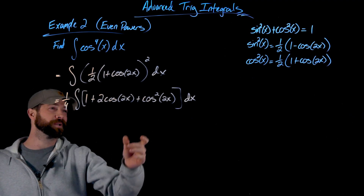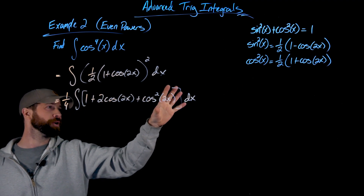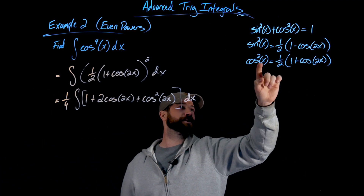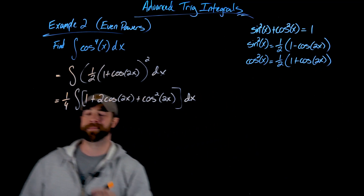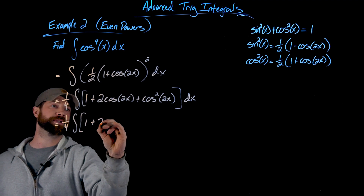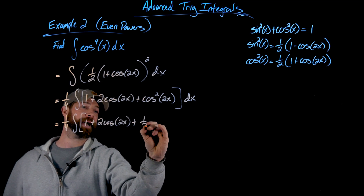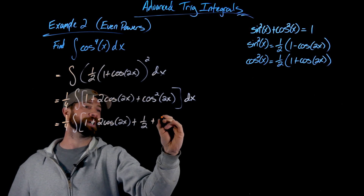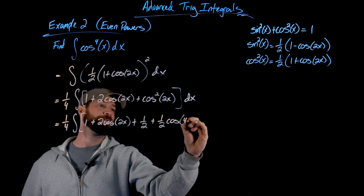Now I'm going to apply that power-reducing formula again to cosine squared of 2x. Since I have cosine squared of 2x, the factor inside is always two times that — so when I write it, it will be cosine of 4x. So I have one-fourth times the integral of 1 plus 2 cosine of 2x plus one-half times (1 plus cosine of 4x). I'll distribute that one-half too, giving one-half cosine of 4x.